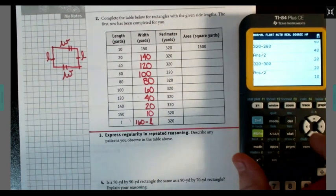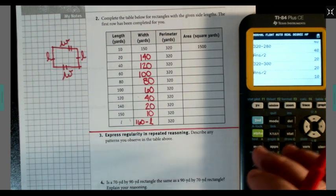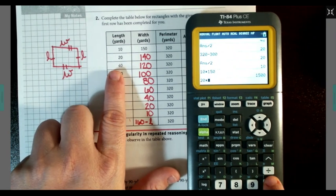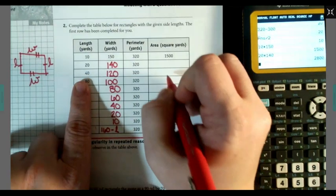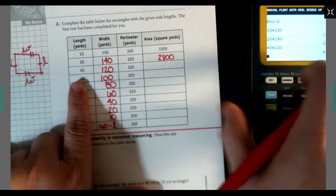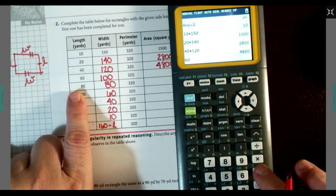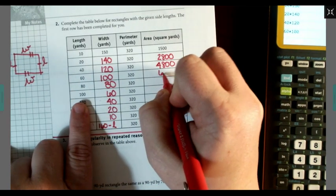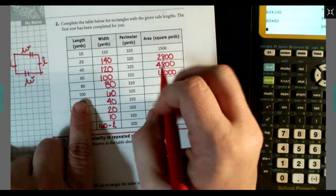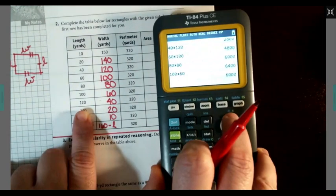Next we got to find our area. Now remember on the previous question it told us that to find the area we're going to take length times width. So they did 10 times 150 was 1,500. So we're going to do 20 times 140, 2,800. 40 times 120, 4,800. 60 times 100, 6,000. 80 times 80, 6,400. 100 times 60, got that number sounds familiar, 6,000.